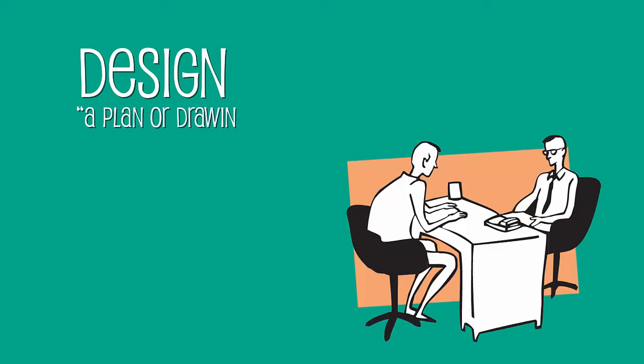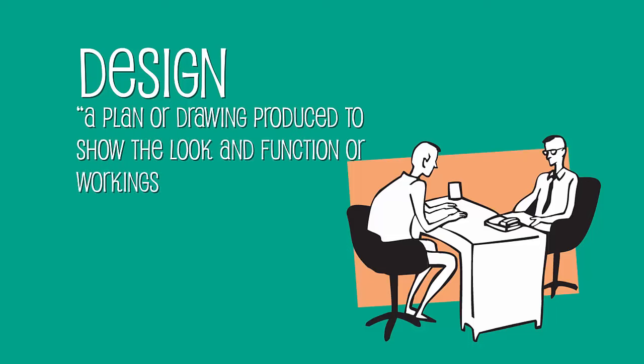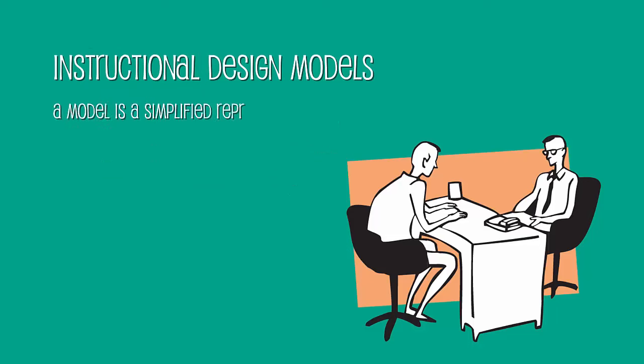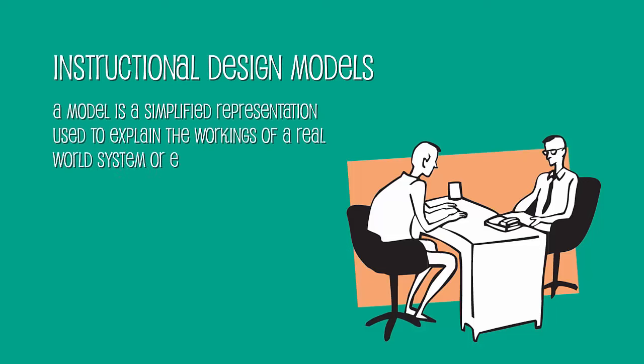We have a working definition of instruction. How about design? A lookup of the word design in the dictionary will produce something like this: a plan or drawing produced to show the look and function or workings of something. Take instruction and look at how it is designed or how an end product is produced. If instruction is purposeful activity intended to cause, guide, or support learning, then instructional design is the plan of that purposeful activity. A model is a simplified representation used to explain the workings of a real system or event. The main goal of an instructional design model is to construct a learning environment that provides learners with the conditions that support learning.